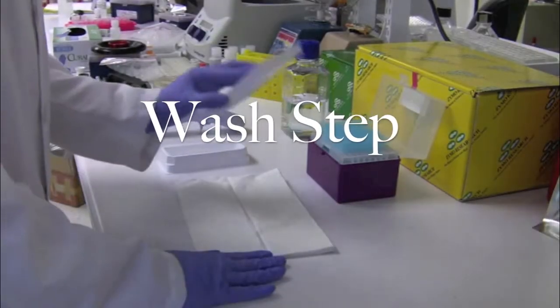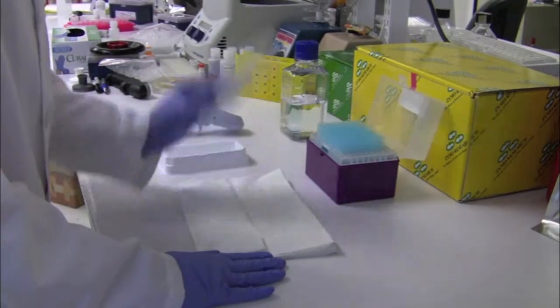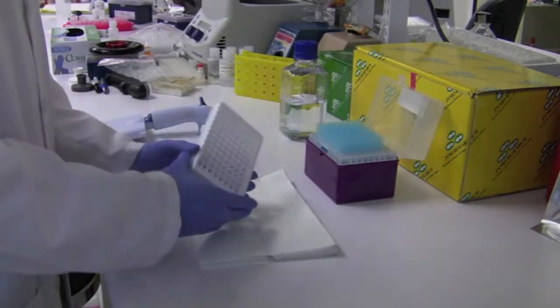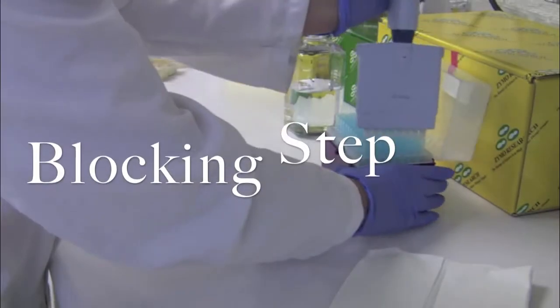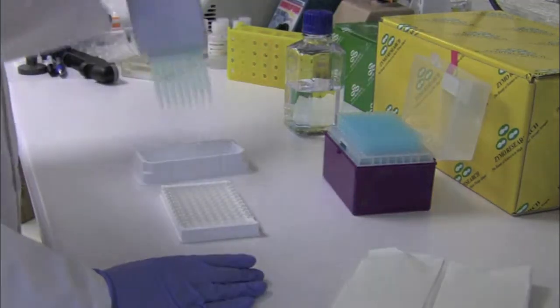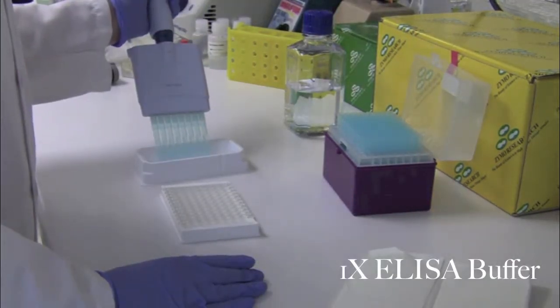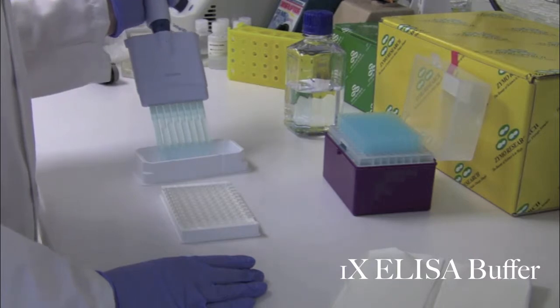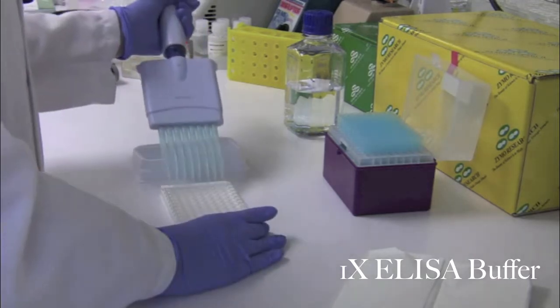Any unbound antibody is removed during the wash step. This is done by discarding the liquid and tapping the plate on paper towels. The plate is then blocked using 1X ELISA buffer in order to decrease nonspecific protein interactions. This is done at 37 degrees Celsius for 30 minutes.